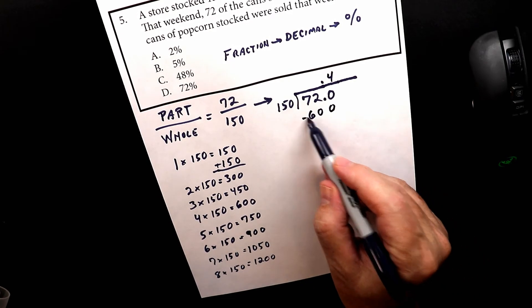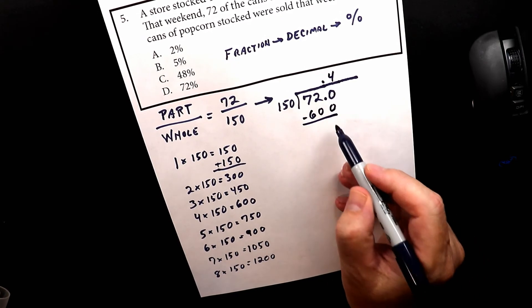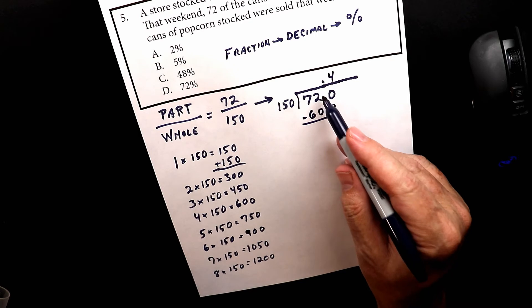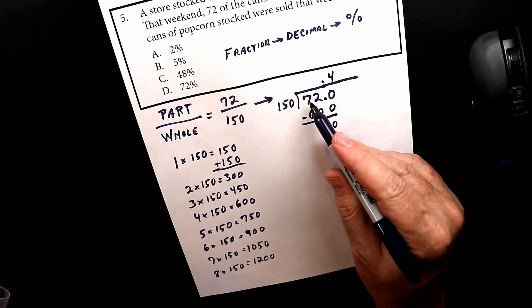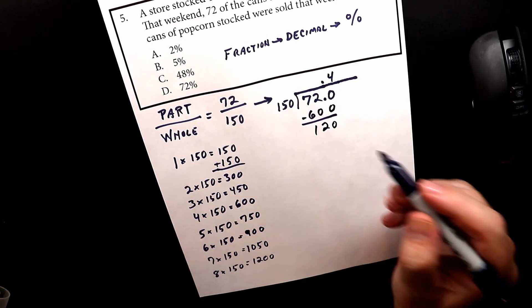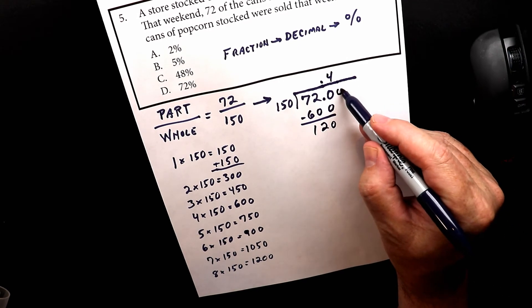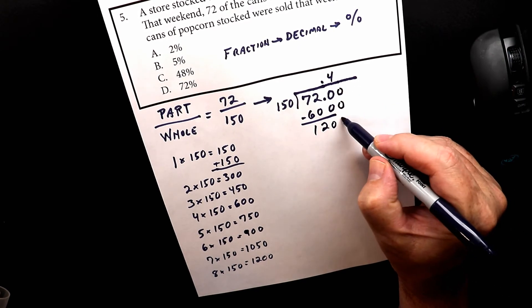And then I just do subtraction. 0 minus 0 is 0. 2 minus 0 is 2. 7 minus 6 is 1. And then I need to bring down a 0.